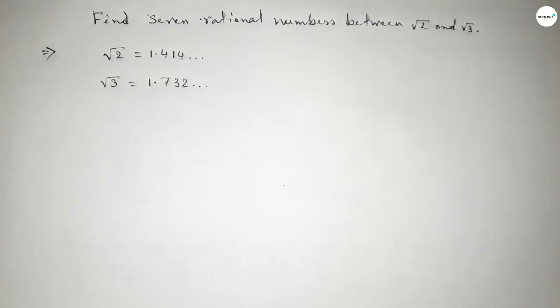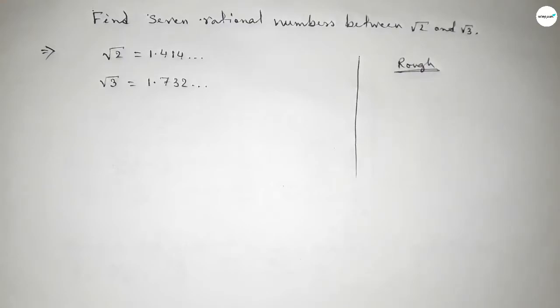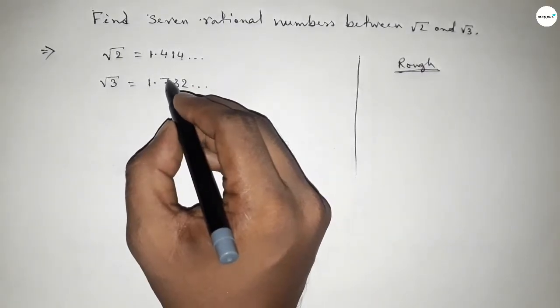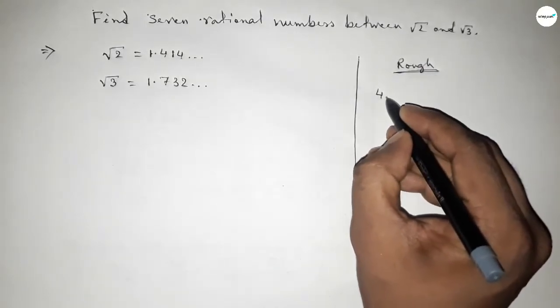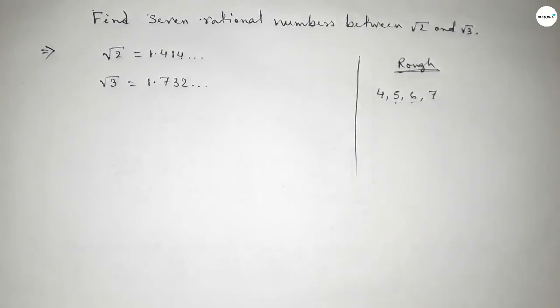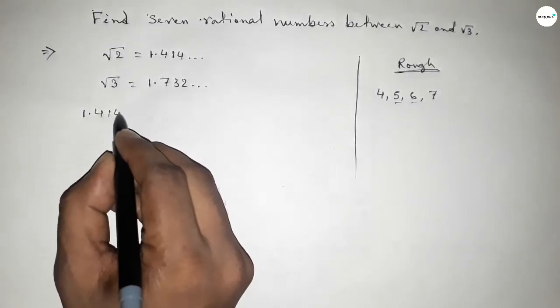Now roughly discussing some calculation here. Here both have the same number 1.1, and this has four and seven. So we can take two digits, five and six, between four and seven. By these two digits we can form infinite number of rational numbers, but here we need only seven rational numbers.